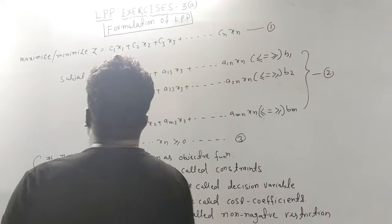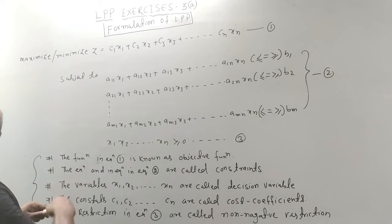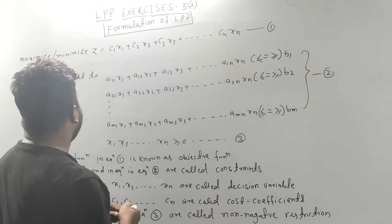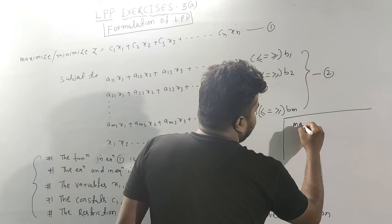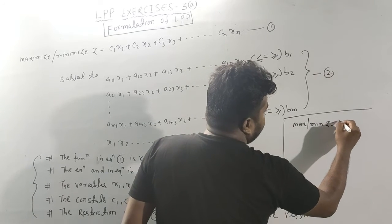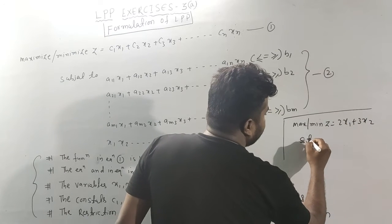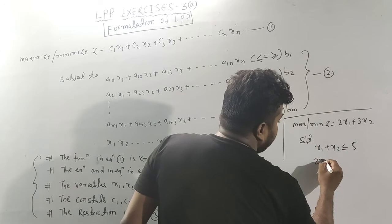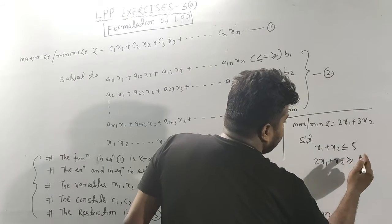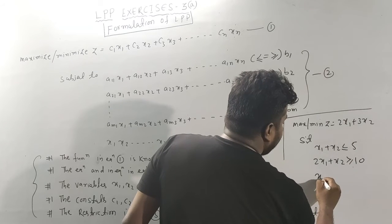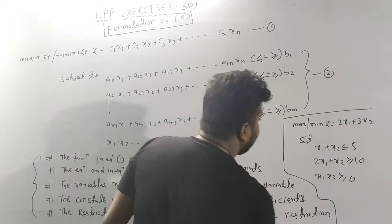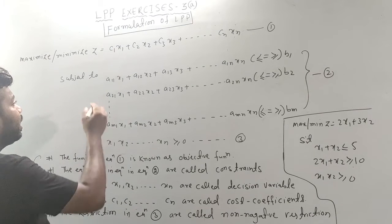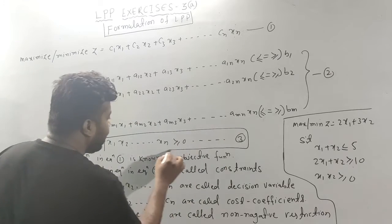Now let's look at the general form of LPP. What is the equation? Generally we can write it as: maximize or minimize z = 2x₁ + 3x₂, subject to constraints such as x₁ + x₂ ≤ 5 and 2x₁ + x₂ ≥ 10, with non-negativity restriction x₁, x₂ ≥ 0.